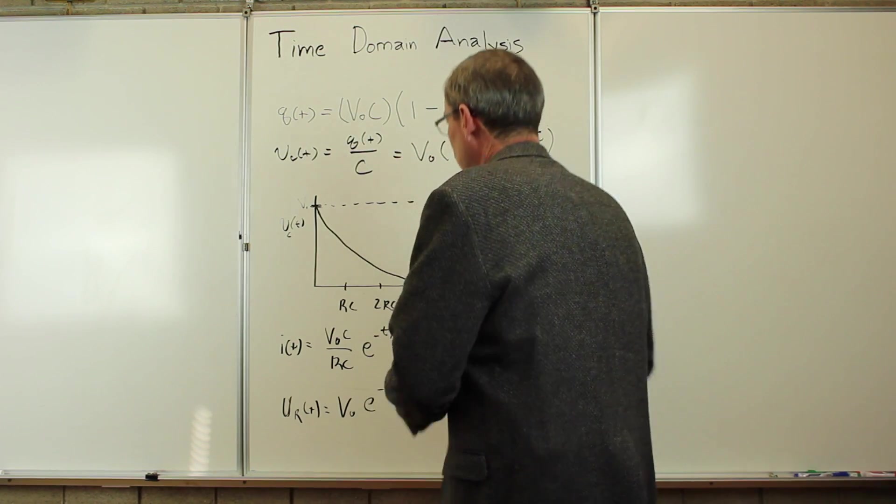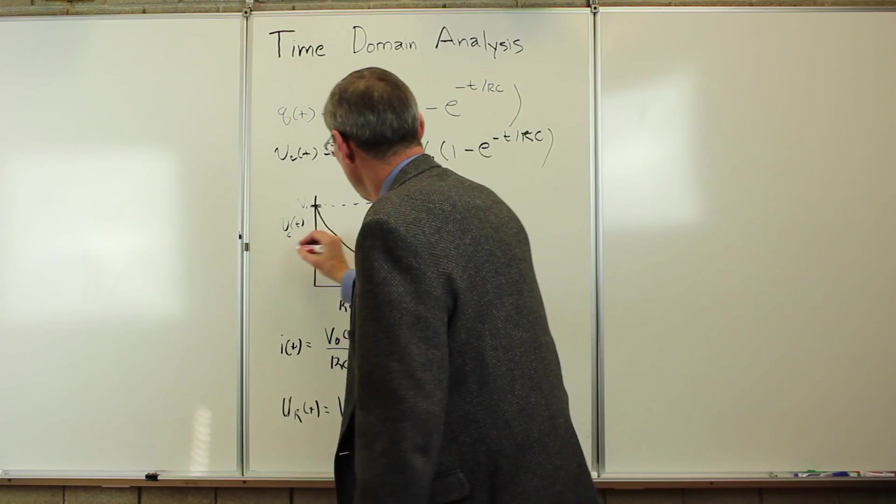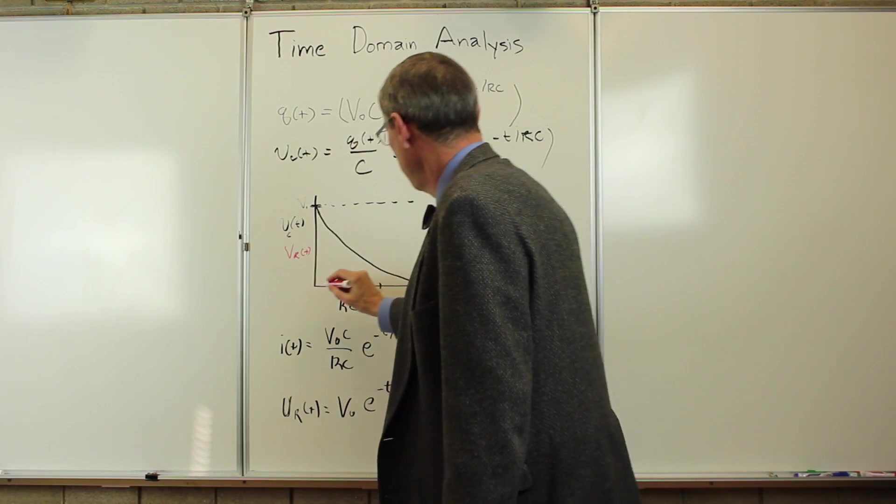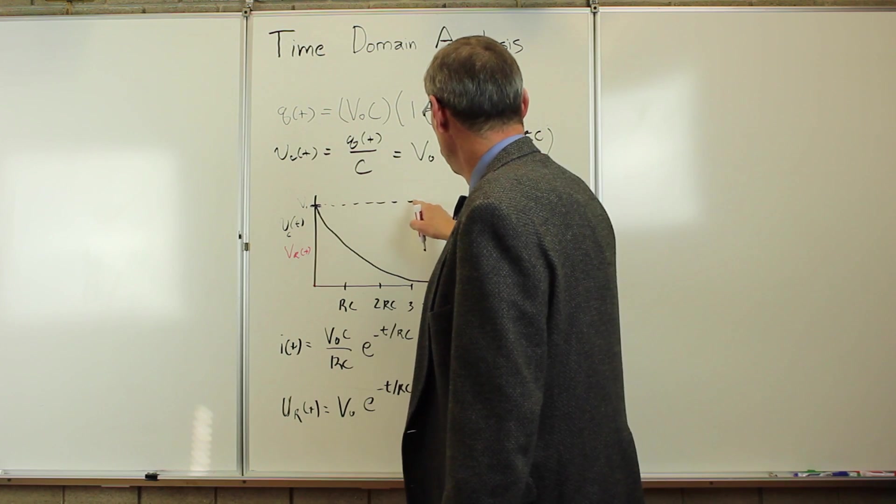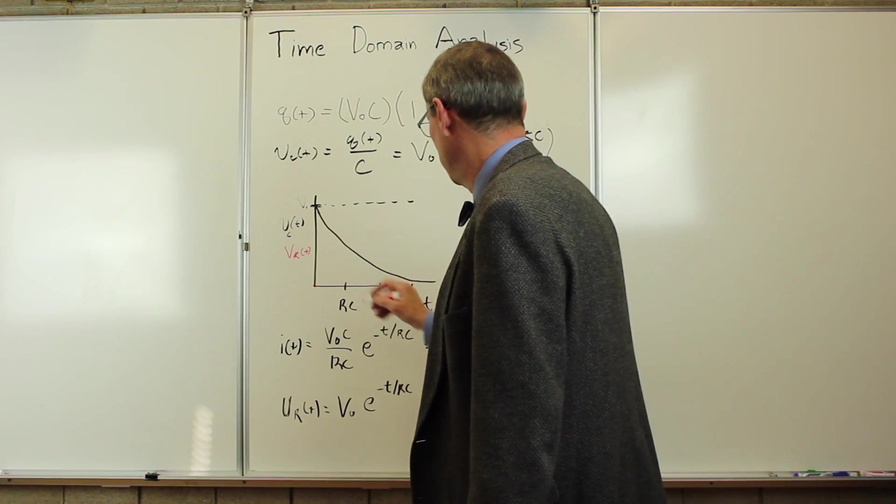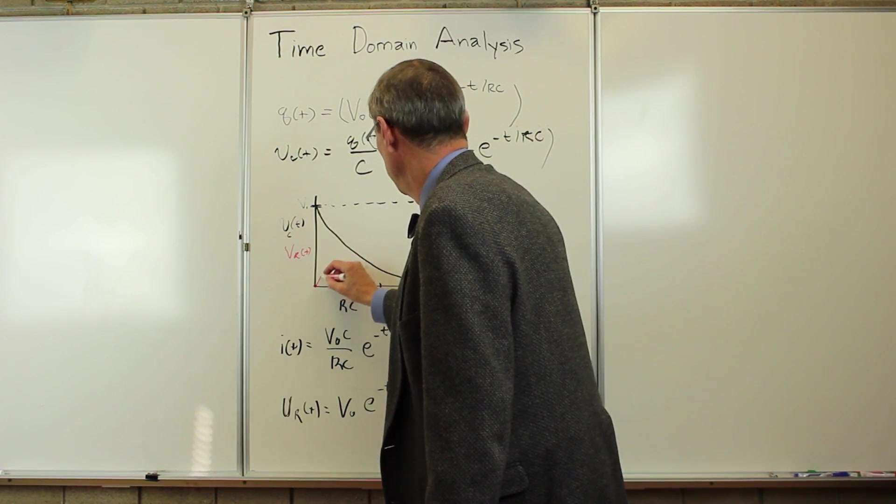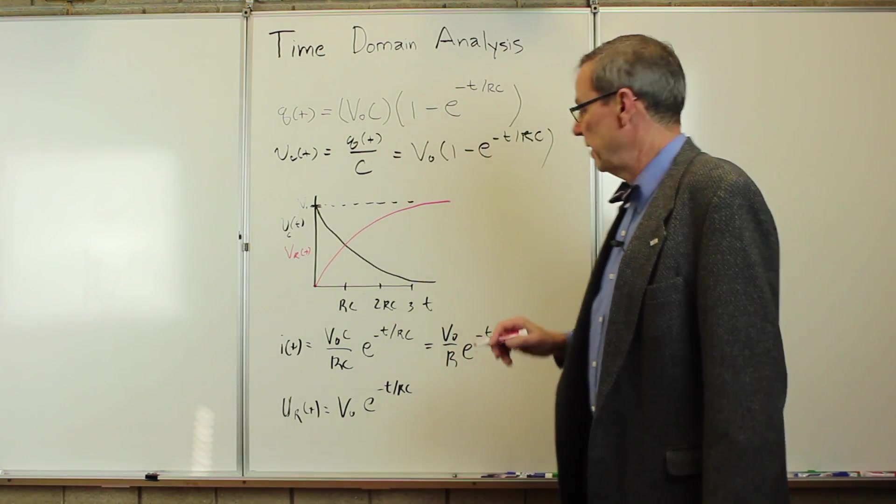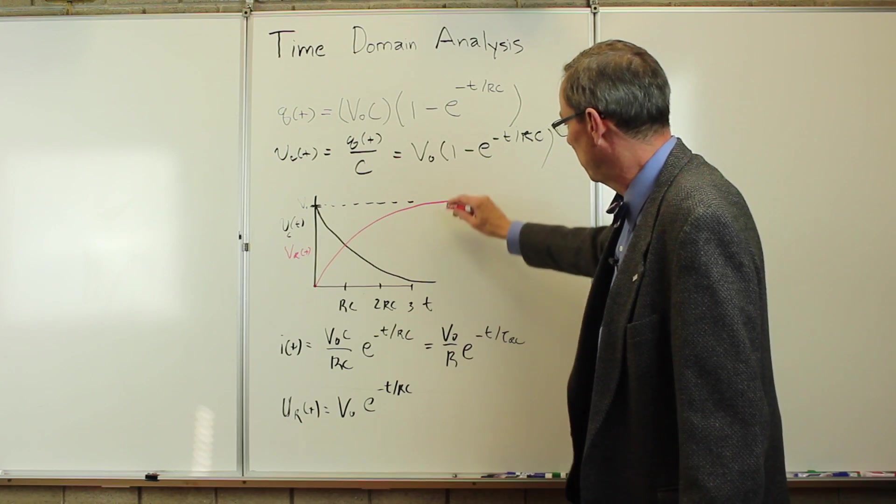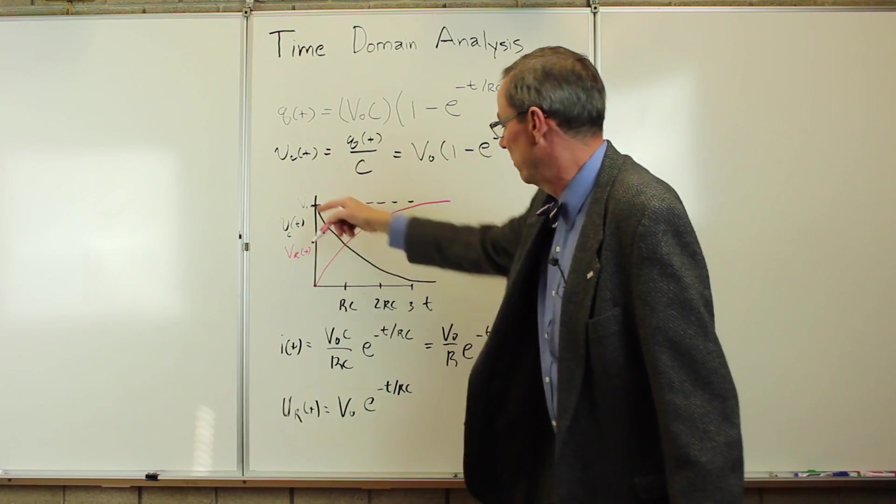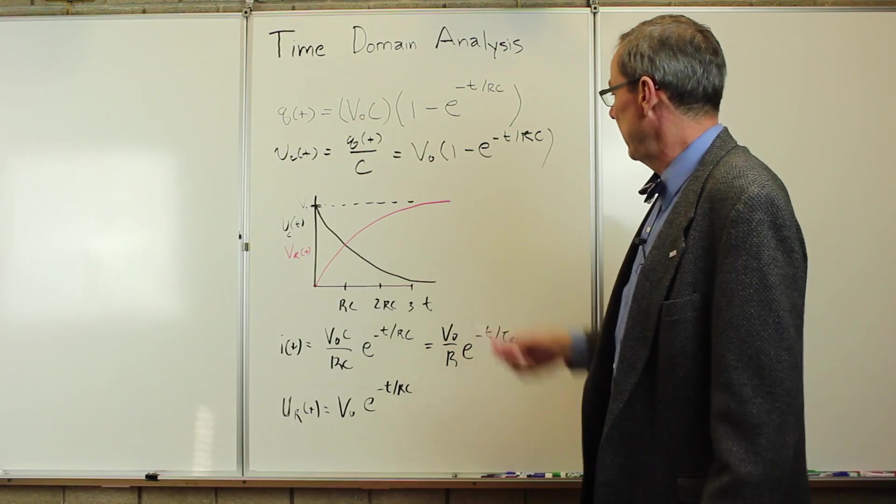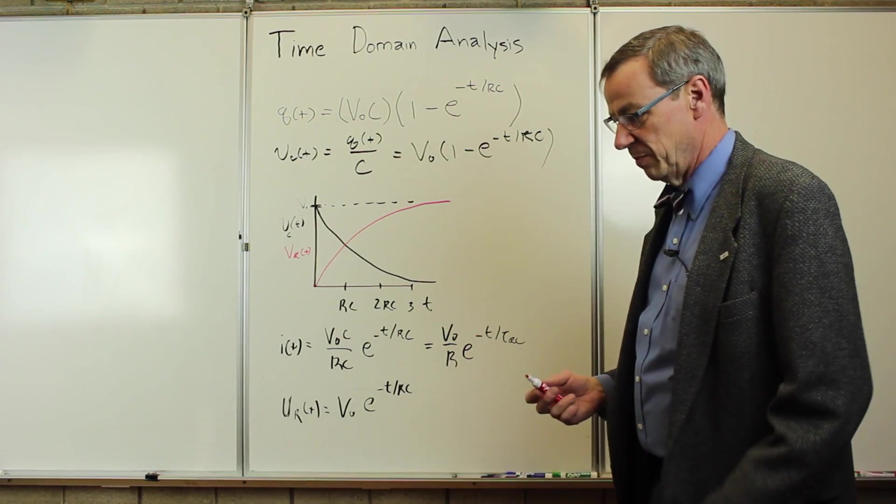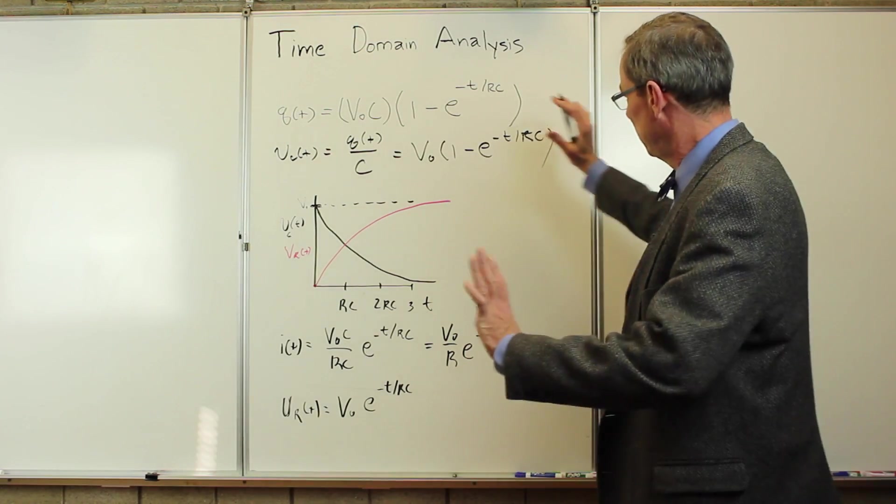Let's do that in a different color here. We'll do VR of t in red. It starts out at zero and builds up to this exponentially. So it is doing exactly the opposite. And the sum of the capacitor plus the resistor voltage is always going to add up to the V0 of the battery voltage. So that is the time dependent voltage across these two components here.